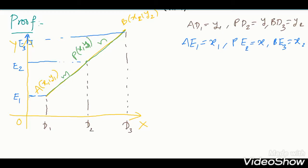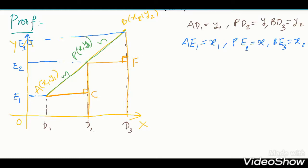From A, drop a perpendicular to line PD2 — give this point the name C. From P, drop a perpendicular to line BD3 — this is 90 degrees — give this point the name F. If you observe the diagram, you get two triangles: the first triangle is APC, and the second triangle is PBF.